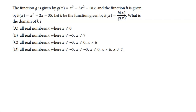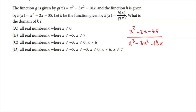In the third question, function g is given by x cubed minus 3x squared minus 18x, and function h is given by x squared minus 2x minus 35. K is defined as h divided by g — so k(x) equals (x squared minus 2x minus 35) divided by (x cubed minus 3x squared minus 18x). For the domain of a rational function, we need to exclude any x-value that turns the denominator to zero. Factoring the denominator: all three terms share a factor of x, giving x times (x squared minus 3x minus 18).